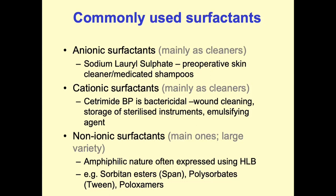Ionic surfactants can be anionic or cationic, depending on whether they are negatively or positively charged. An example of an anionic surfactant is the sodium lauryl sulfate system, with a sulfate head group and different hydrocarbon chain lengths, used largely for cleaning and medicated shampoos. Cationic surfactants are also used mainly as cleaners. Non-ionic surfactants are used more often for formulation purposes because they tend to be more biocompatible and less toxic, making them more suitable for pharmaceutical formulations intended for use inside the body.